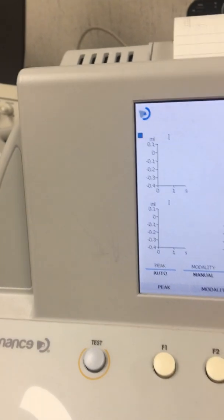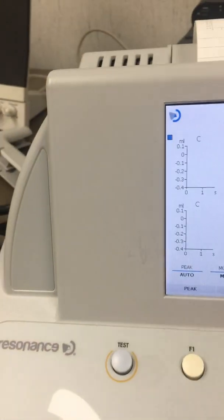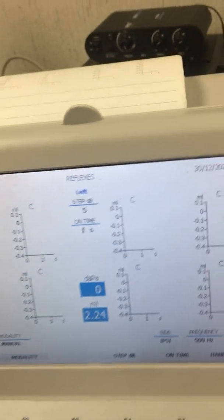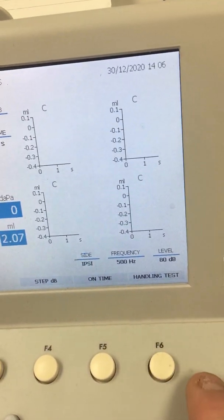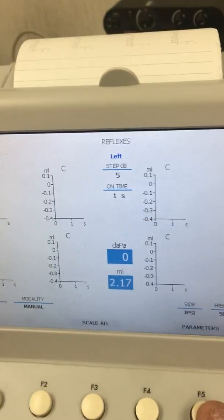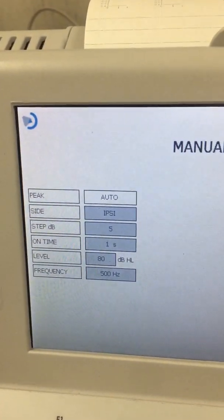We're going to do the left side, so make sure you have it on the left side. We're going to do ipsy. Then I want you to go to F6 handle test and F5 for parameters, and you can set your peak.